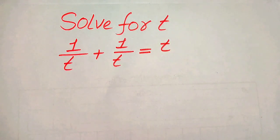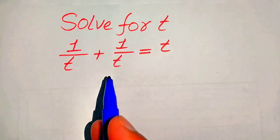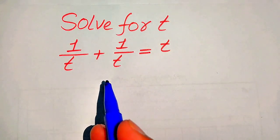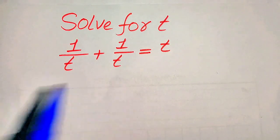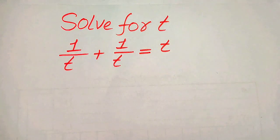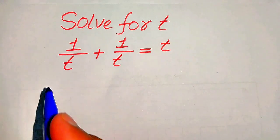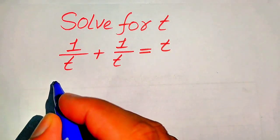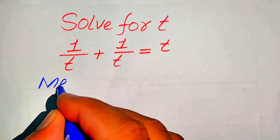Hello everyone. How to solve this problem: find all values of t if 1/t + 1/t equals t. We will solve this problem using two methods.